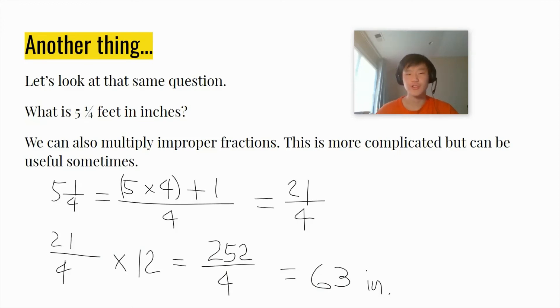Here's another thing. Let's look at the same question. What is 5 and 1/4 feet in inches? We can also multiply improper fractions when the numerator is higher than the denominator. This is more complicated but can be useful as well sometimes. So 5 and 1/4 is equal to 5 × 4 + 1. So we multiply the denominator to the whole number and then we add the numerator of the 1/4. And we put that all over the denominator. So when we multiply and add everything, we get 21/4. Since we know that 12 inches are in a foot, 21/4 × 12 = 252/4, which will get us 63 inches, the same as the one from before.